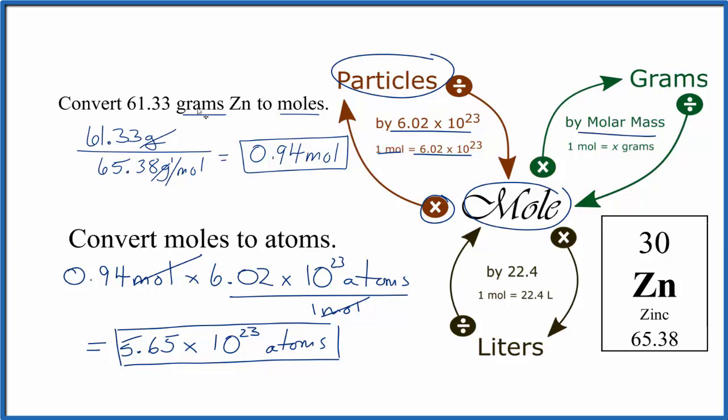So to recap, we converted our grams given in the problem to moles, then we multiplied those moles by Avogadro's number, and that gave us the number of zinc atoms. This is Dr. B, and thanks for watching.